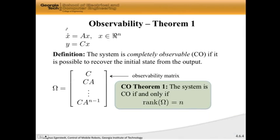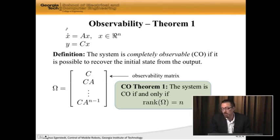It says, complete observability theorem number one. It says, the system is completely observable, if and only if, the rank of omega is equal to little n. Meaning, this observability matrix has full rank.